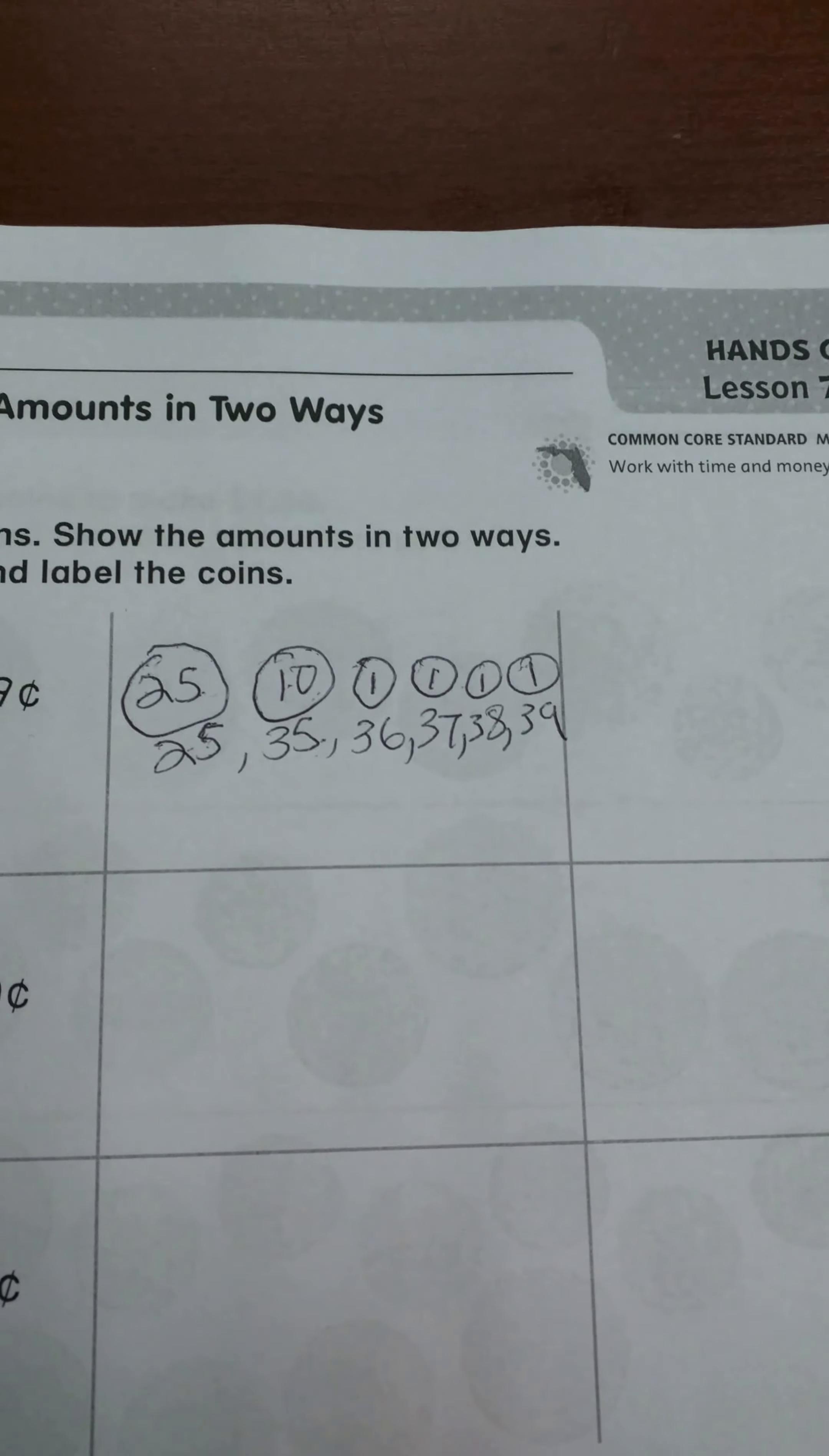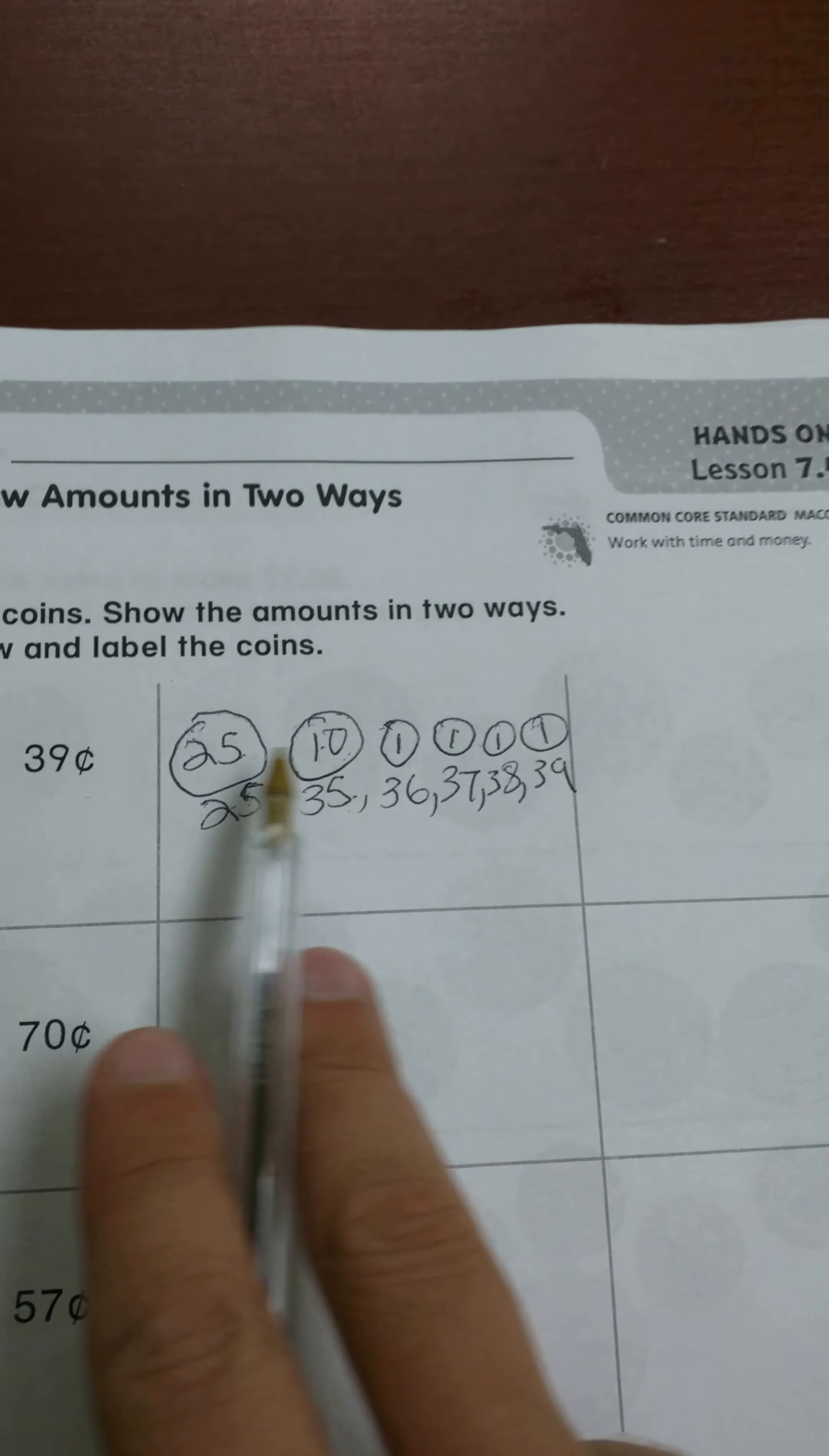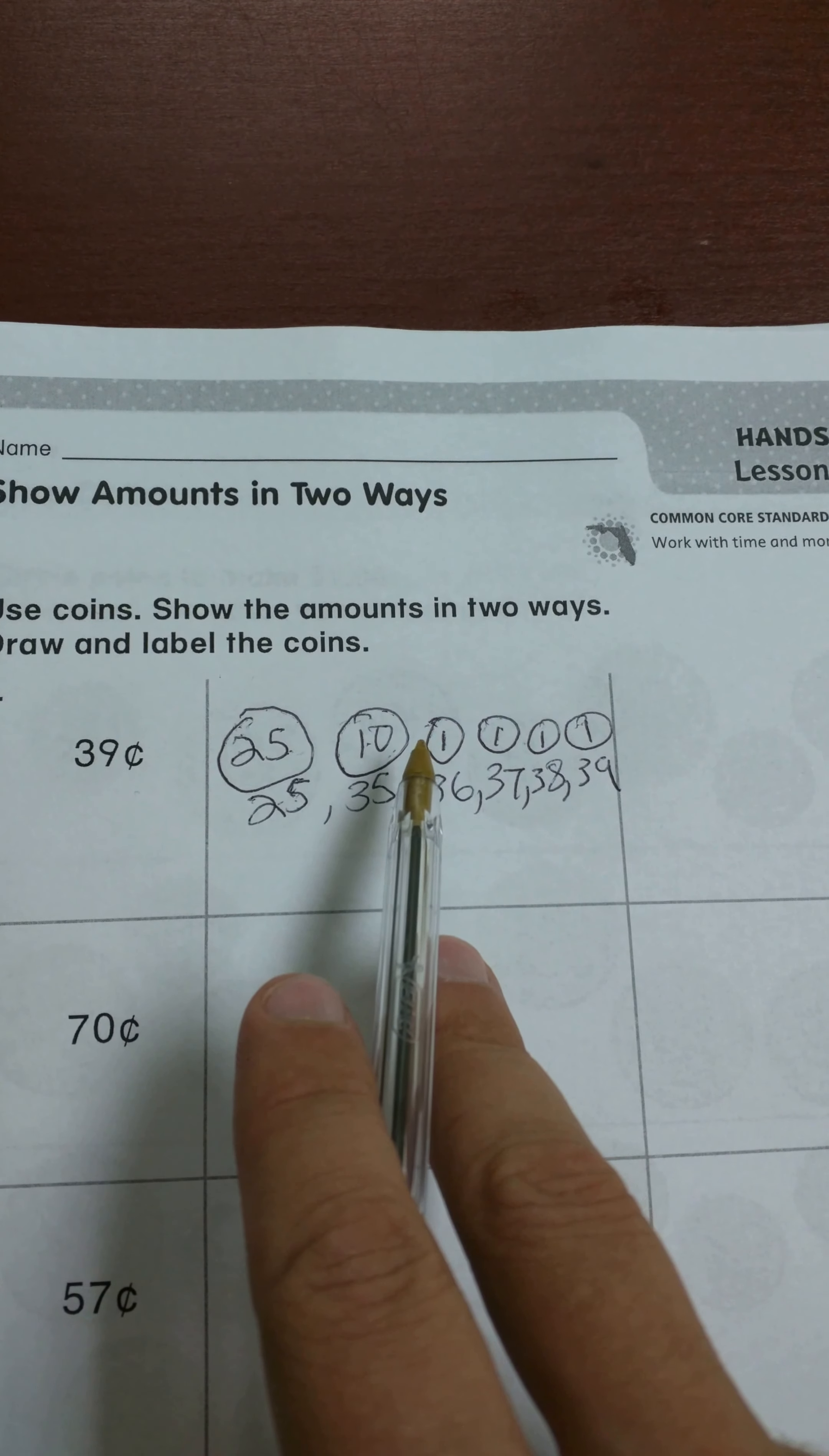Now if I'm going to look at my second way to make that, and I used the largest coins I could on this, so what I'm going to look for in my second way is which one of these coins can I break apart to make a different, to use the coins a different way.